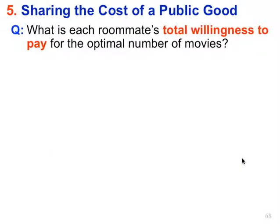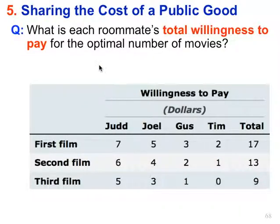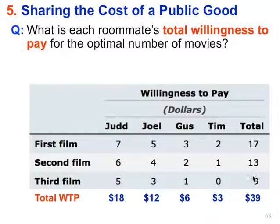What is each roommate's total willingness to pay for the optimal number of movies — that is, the 3 films? For Judd: 7 plus 6 plus 5, total willingness to pay is $18. For Joel: $12. For Gus: $6. For Tim: $3. You just add up their total willingness to pay for each to watch all 3 movies. Combined, all four together are willing to pay $39 total to watch the 3 movies.